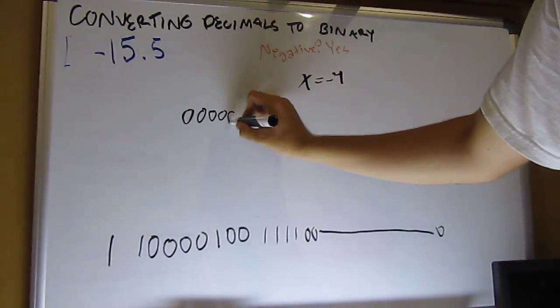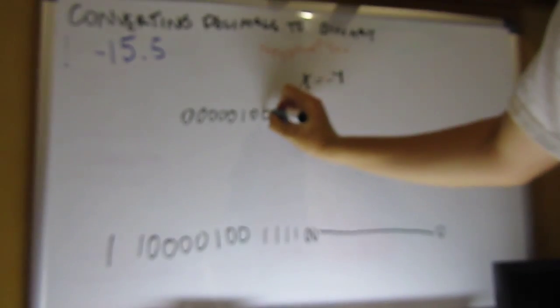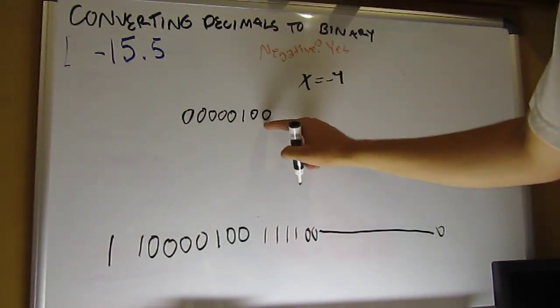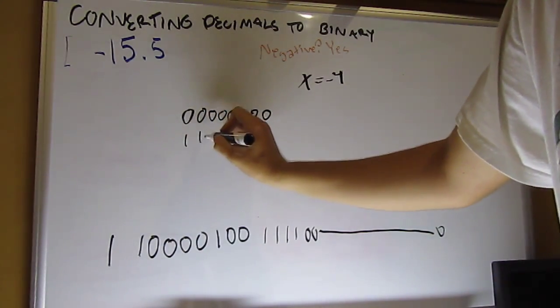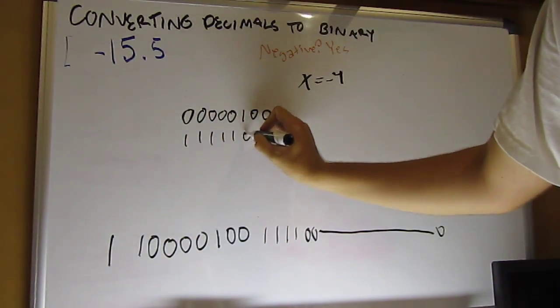So 1, 2, 3, 8. Now, we want to do a 2's complement. So we flip the bit. So we go 11111011.